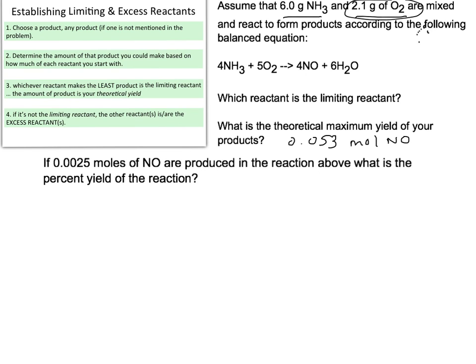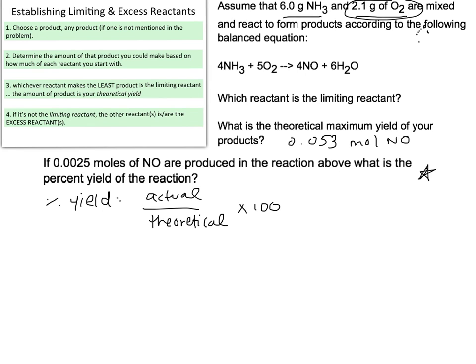O2 was our limiting reactant, so that's what dictated the 0.053 moles. This theoretical maximum allows us to calculate percent yield. Percent yield is your actual amount — your experimental amount of substance — divided by your theoretical maximum, multiplied by 100. In this problem, they told us that 0.0025 moles of NO are produced from this reaction — that's how much they were able to isolate, clean up, measure, and record.